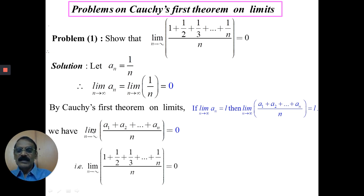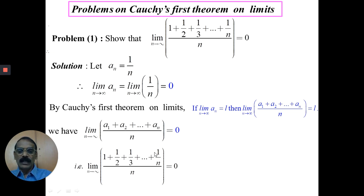Therefore, the arithmetic mean of the first n terms also converges to 0. That is, limit of (a1 + a2 + a3 + ... + a_n)/n as n tends to infinity equals 0. Where a1 = 1, a2 = 1/2, a3 = 1/3, and a_n = 1/n. So the limit of (1 + 1/2 + 1/3 + ... + 1/n)/n as n tends to infinity is 0.